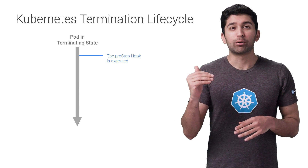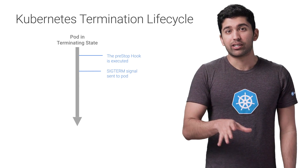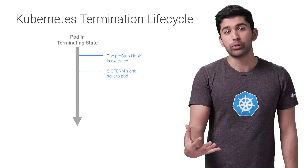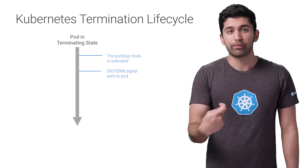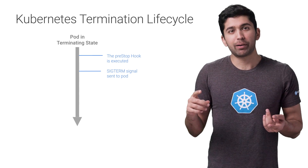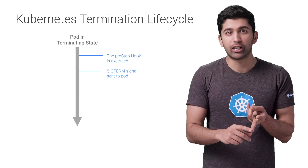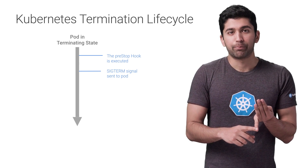At this point, Kubernetes will send the SIGTERM signal to the containers in the pod. This signal lets the containers know they're going to be shut down soon. Your code should listen for this event and then start shutting down cleanly. This may include stopping any longer-lived connections like a database connection or a WebSocket stream, and saving the current state. Even if you're using the pre-stop hook, it's important that you test what happens to your application when you send it the SIGTERM signal, so you're not surprised when it happens in production.